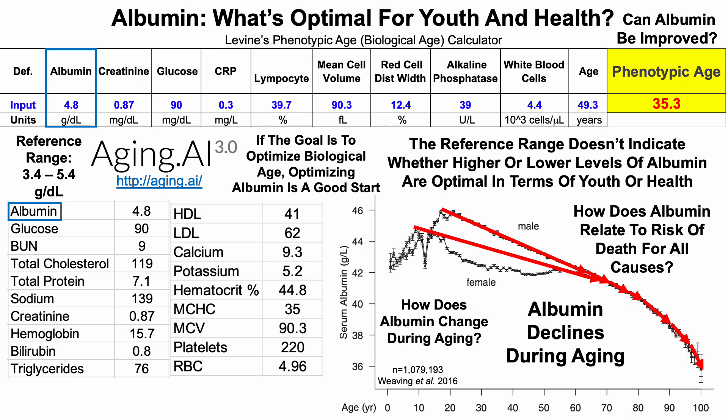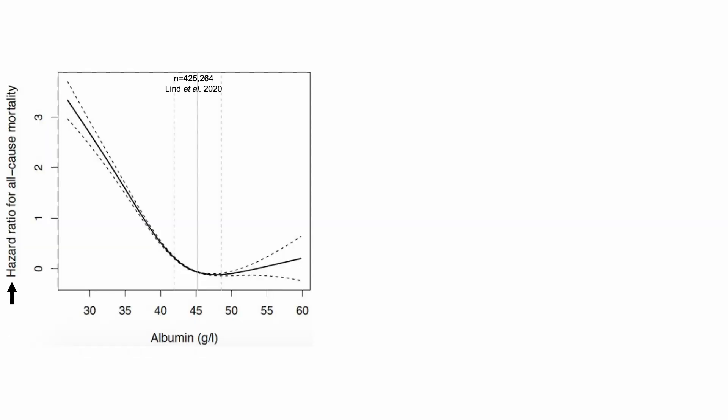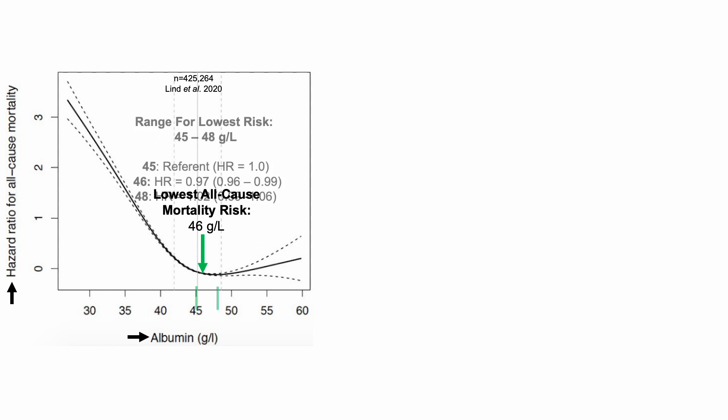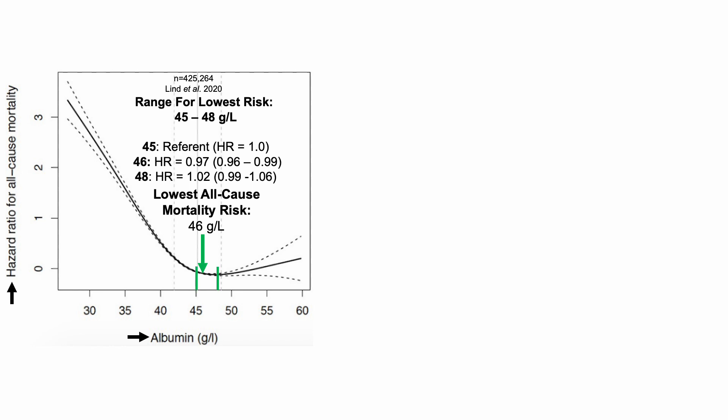How does albumin relate to risk of death for all-cause? The hazard ratio for all-cause mortality is on the Y-axis plotted against the concentration of albumin on the X. Lowest all-cause mortality risk was present for an albumin concentration of 46 grams per liter, but there is a range for the lowest risk. Starting with 45, which was defined as the reference at a hazard ratio of 1.0, we can see for 46 the hazard ratio was 0.97, a 3% reduced risk. That's significant because the 95% confidence interval was completely below 1, so it's a significant association.